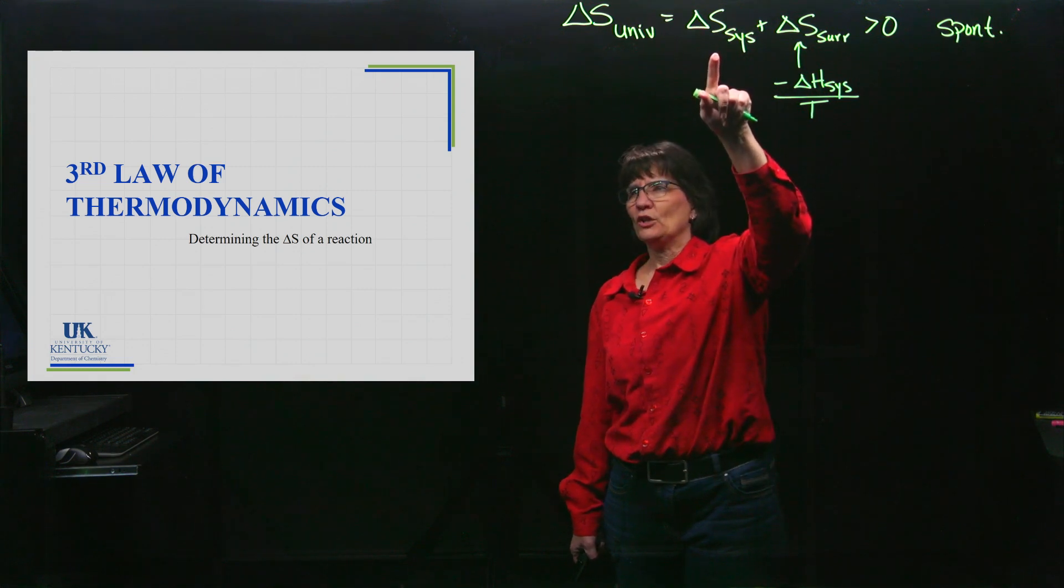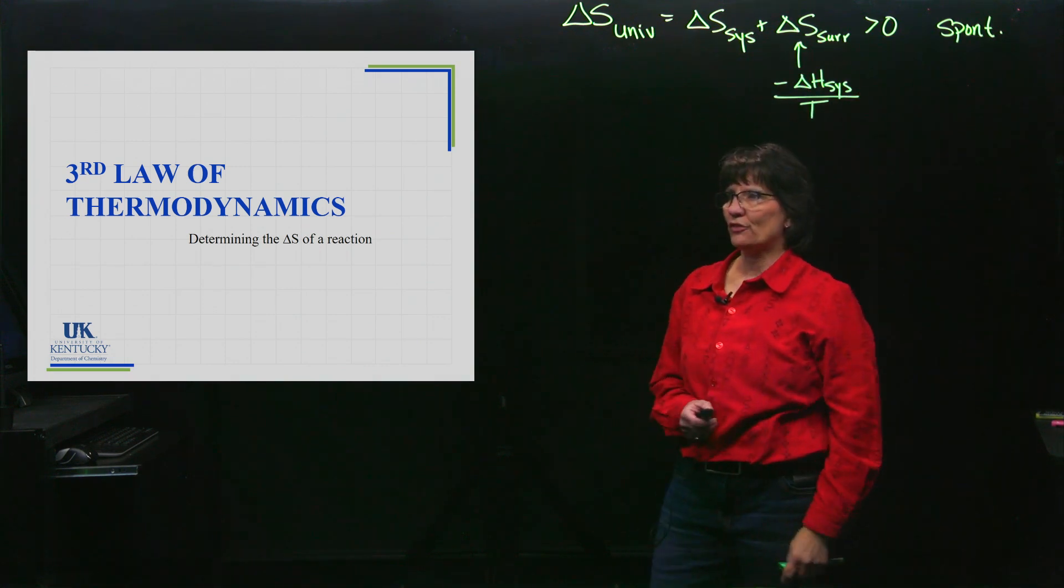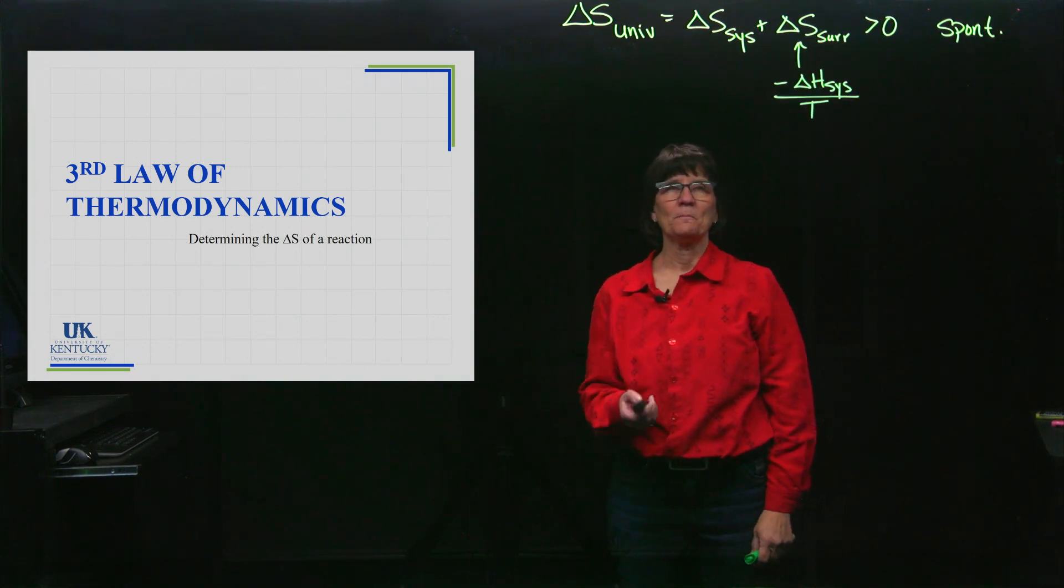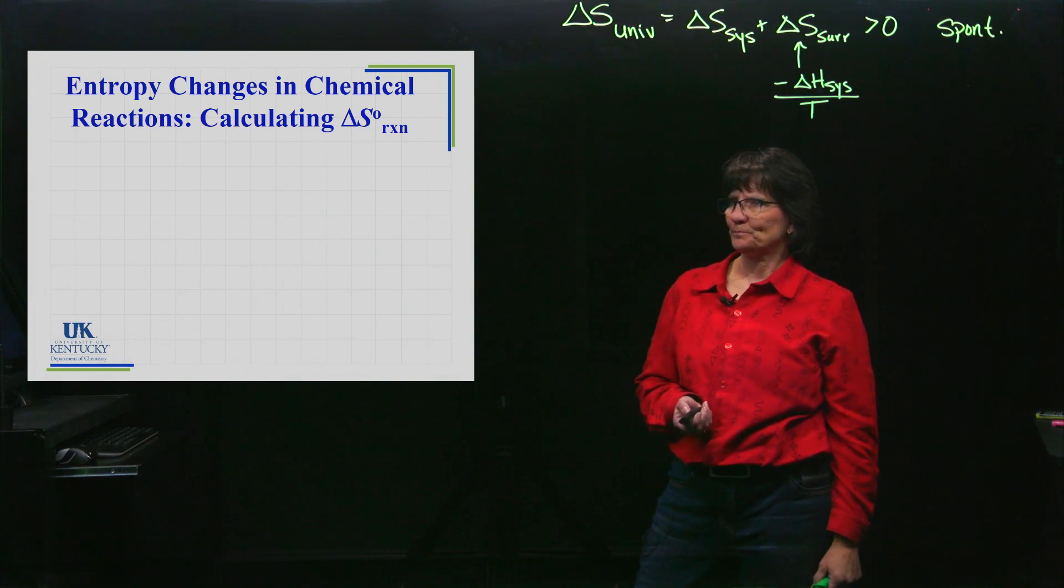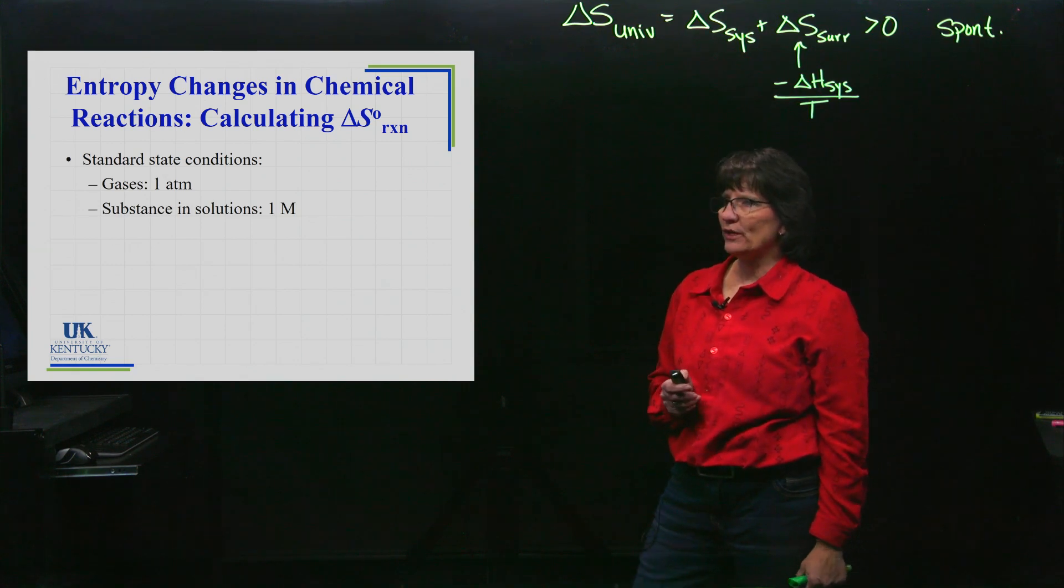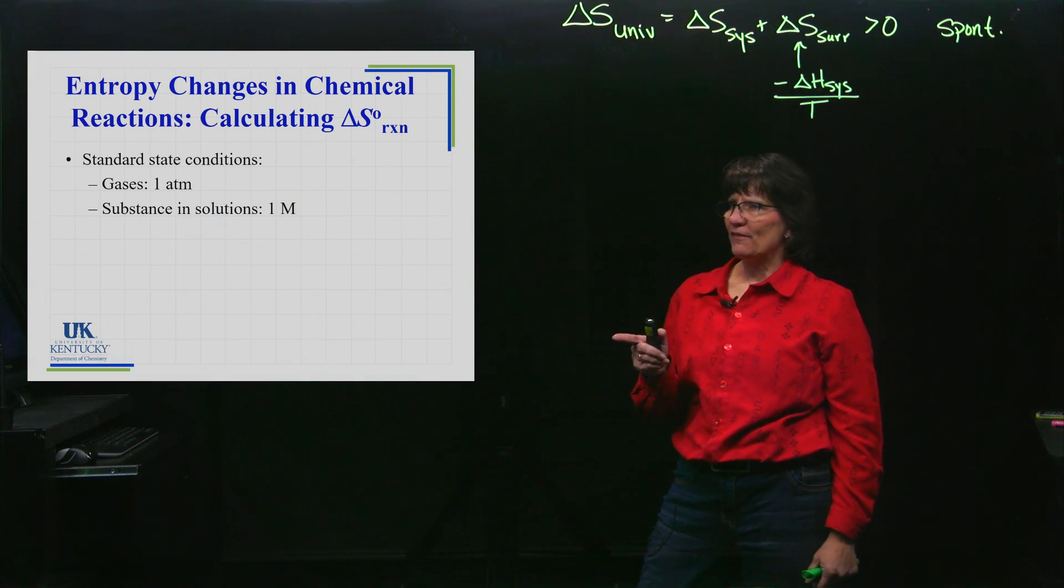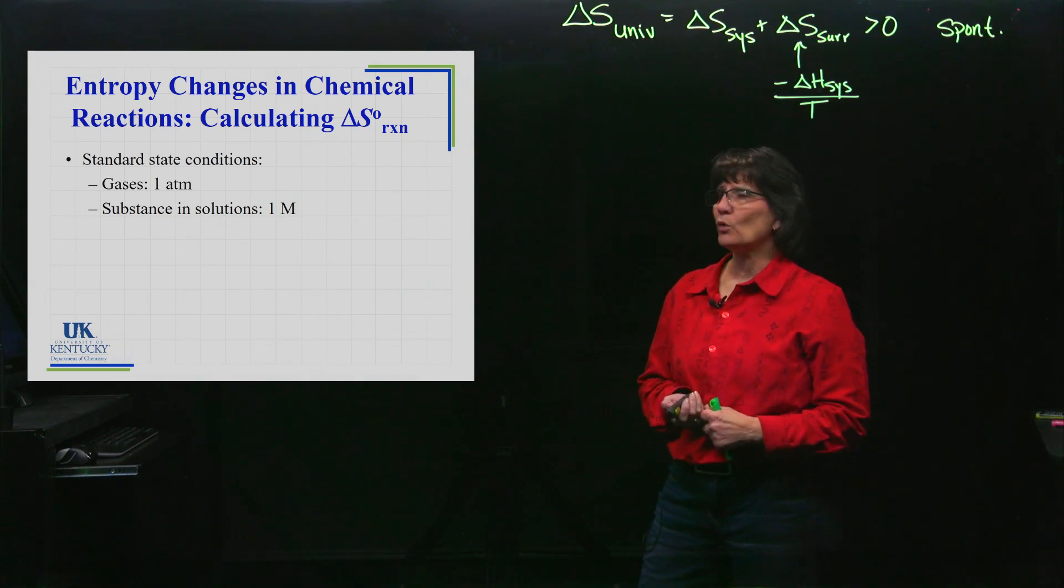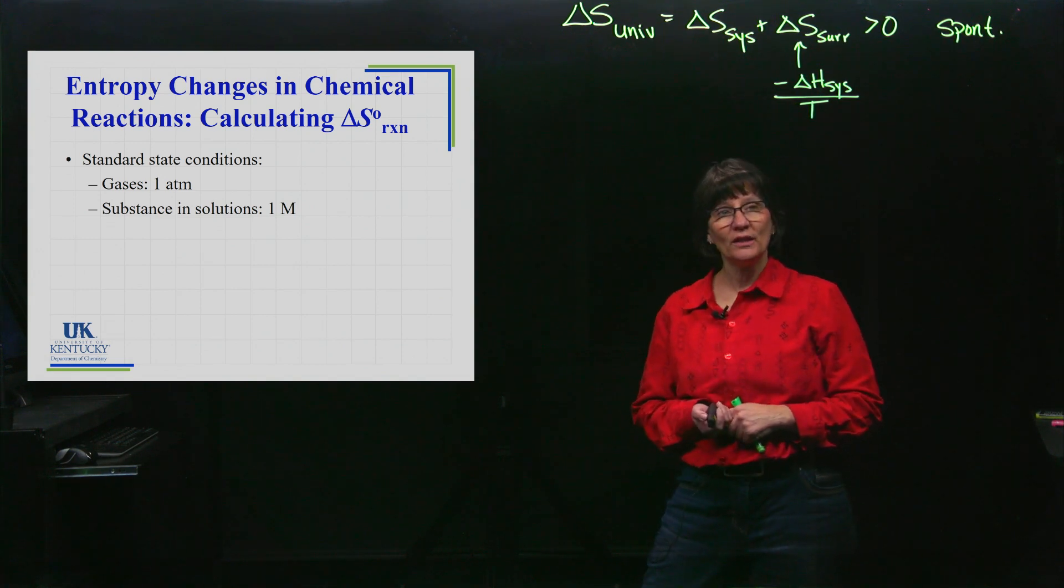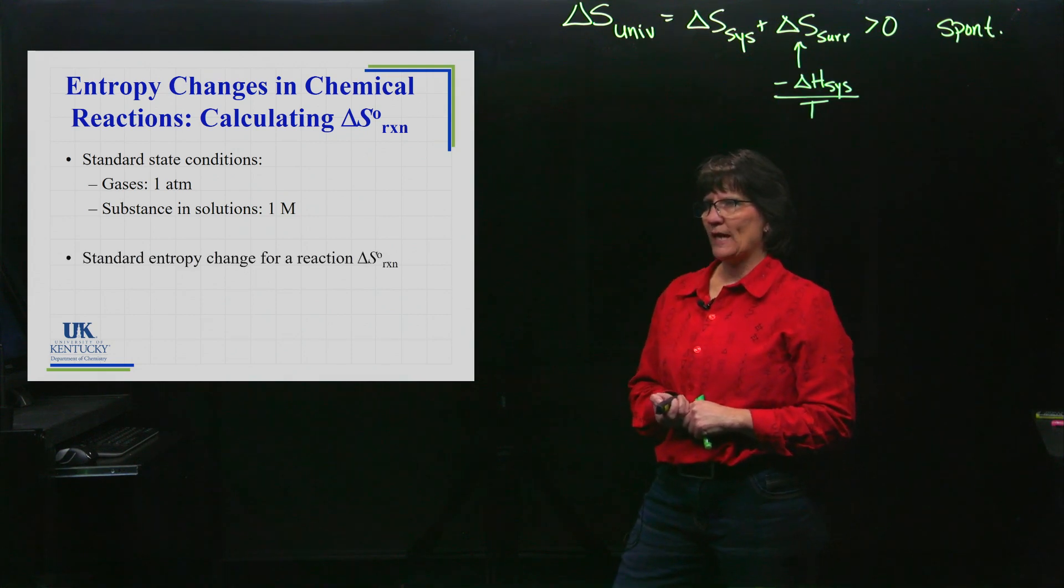Now we're ready to look at how to obtain the ΔS of the system. Standard entropy has that little circle symbol - it's one atmosphere. If the substance is in solution, it's going to be one molar. Those are the two conditions: if it's a gas, it's at one atmosphere; if it's in solution, it's one molar.